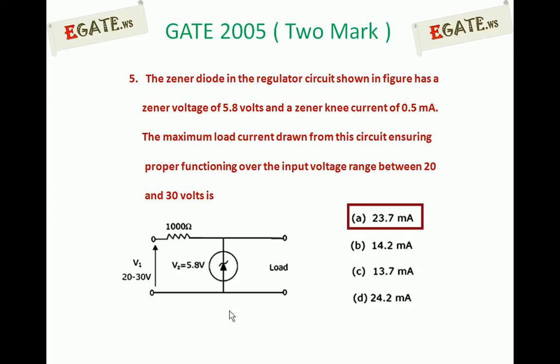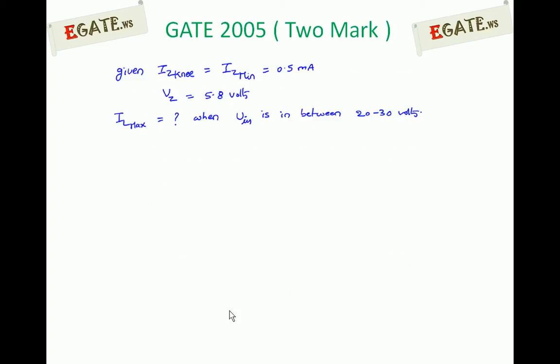Zener diode can act as voltage regulator if the zener diode is in zener breakdown region. The given parameters are Iz knee, that is zener knee current, also called as minimum zener current required for proper functioning as voltage regulator, that is 0.5 mA. Zener current minimum of 0.5 mA should go through the zener diode so that it will be in breakdown region. And zener breakdown voltage is given as 5.8 volts. We need to calculate maximum load current whenever the input is changing from 20 to 30 volts.